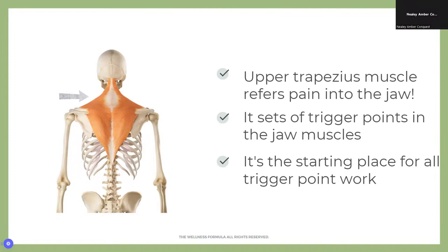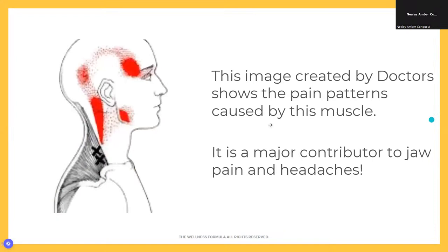This muscle is known to hold the most trigger points in the whole body. Not only that, it actually refers trigger points elsewhere — trigger points start in one area and spread to other areas. One of the key areas this muscle causes trigger points in is the jaw. Whenever I work with any client experiencing problems in their head, this is the starting place, because if we don't sort out this problem, the problems will just keep coming back.